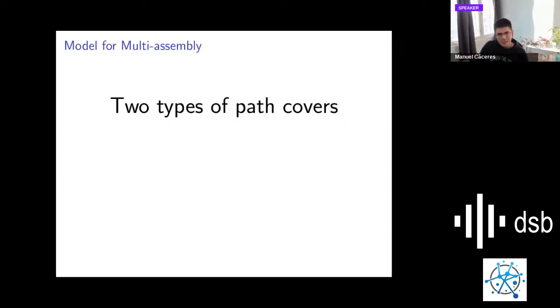We developed two types of path covers. The first model is minimum path cover. We consider that a solution is a path cover with minimum size. To this size, we call it the width of the graph, denoted by k. It is known that in a DAG, this minimum path cover can be computed in order V times E.